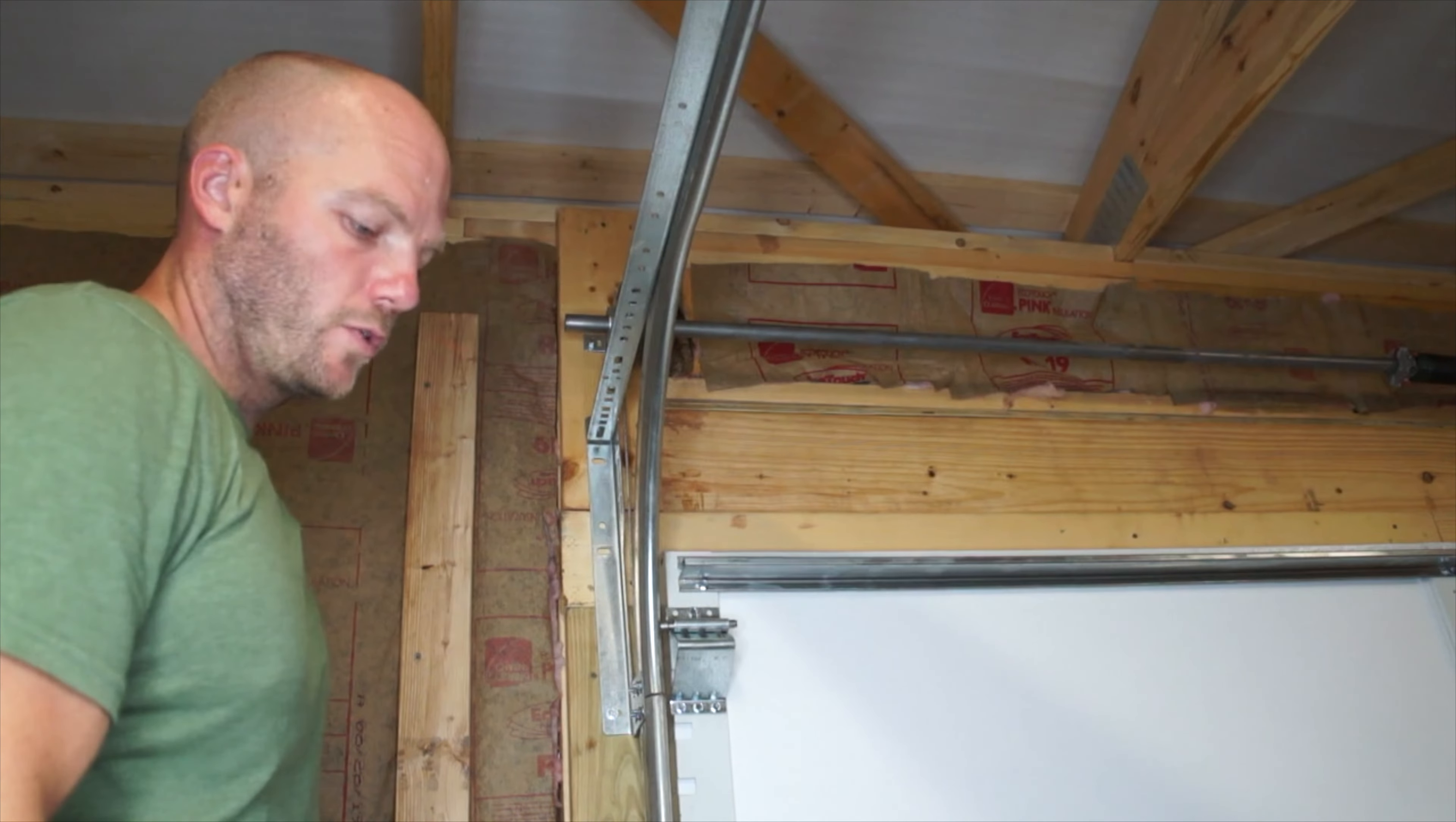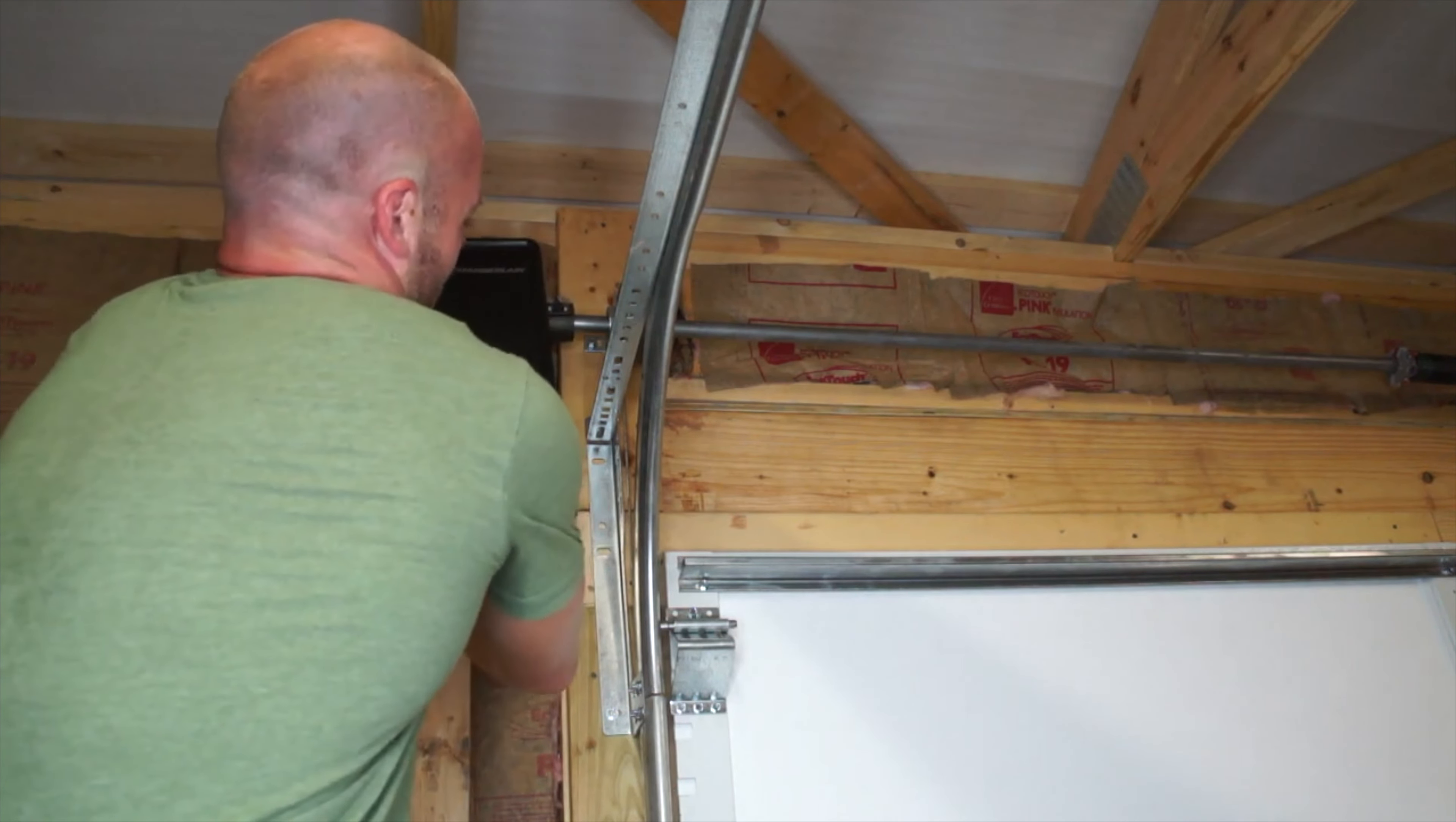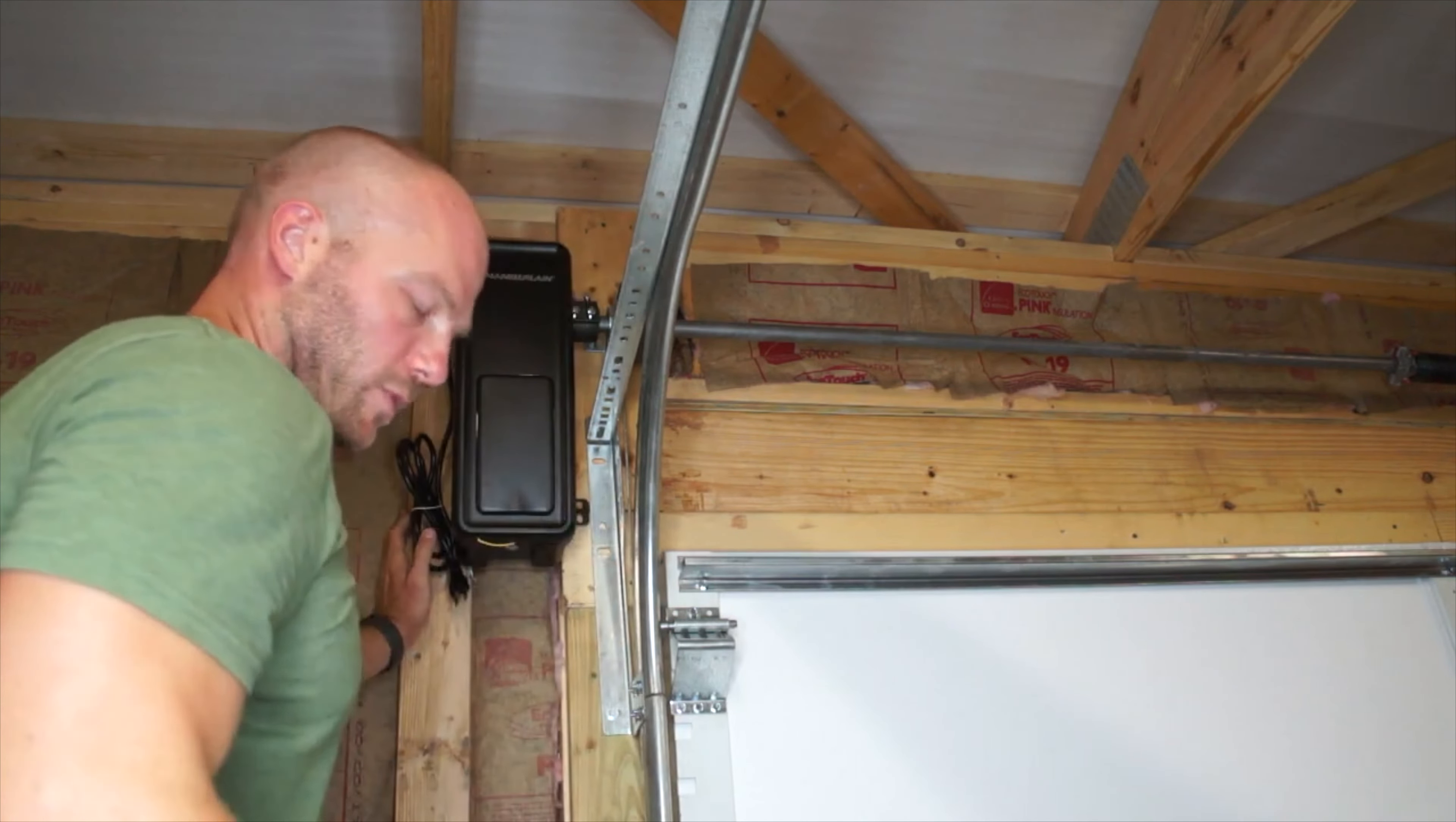Okay, the next step is to mount the unit to the wall. So, the collar goes over the end of the part that turns to raise it up that has the spring attached to it, so that should fit right over the end of that, like so. And then this bracket will mount to the wall down here.